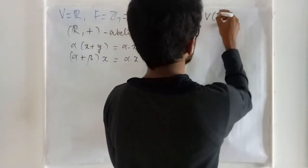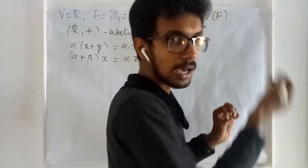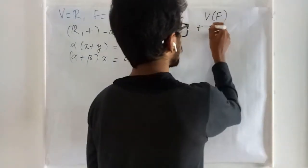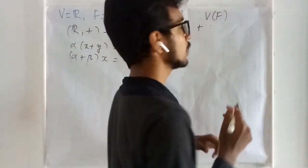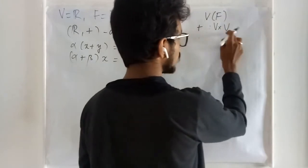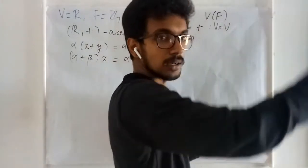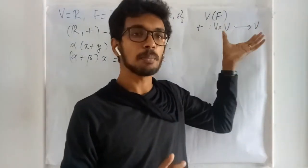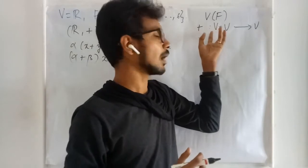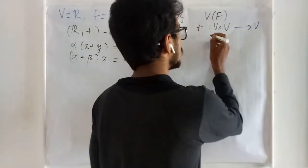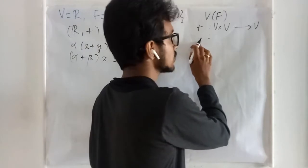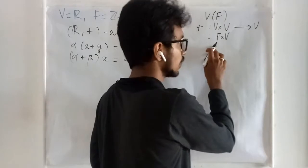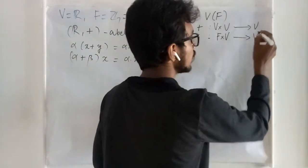V is a vector space over F means there must be two operations: vector addition and scalar multiplication. Vector addition is defined as a mapping from V cross V to V — we take two elements of V and check whether the result is a member of V. For scalar multiplication, we take one element from V and one element from the field F, and the resultant has to be in V.